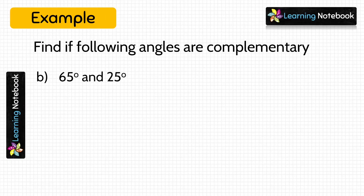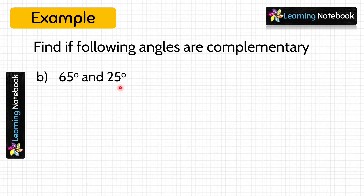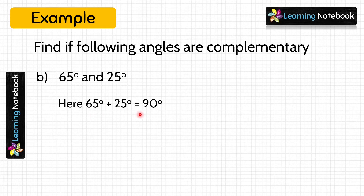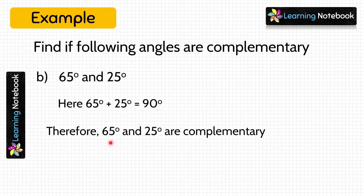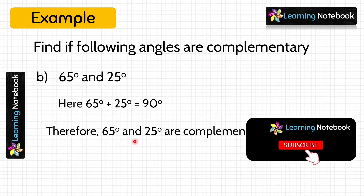Let's do the next part of this question. This time we are given the angles as 65 degrees and 25 degrees. To check if they are complementary angles or not, let's add them. 65 degrees plus 25 degrees equals 90 degrees. Since their sum equals 90 degrees, they are complementary angles.